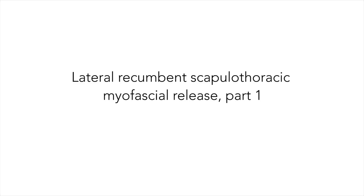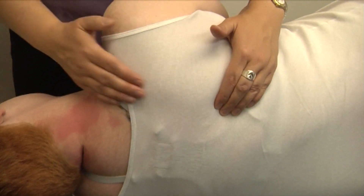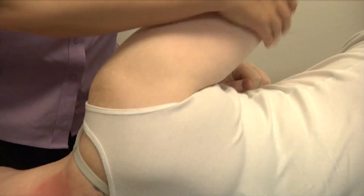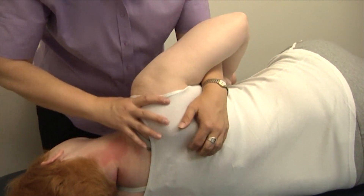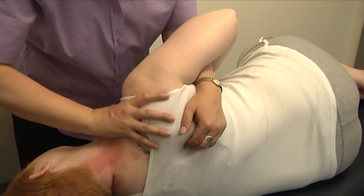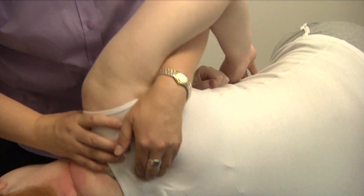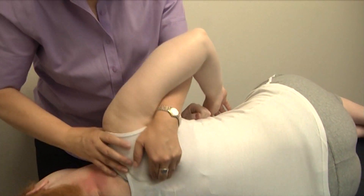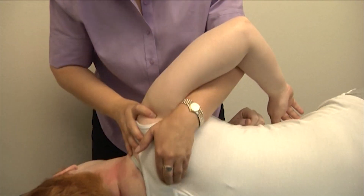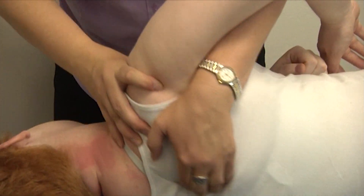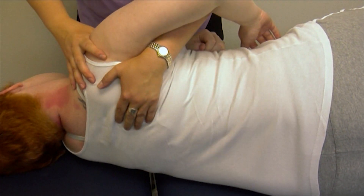Lateral recumbent scapulothoracic myofascial release, Part 1. The subject lays on her side, facing the physician. The subject's arm is placed over the physician's caudad arm. Contact is on the superior and inferior medial angles of the scapula. The hand on the superior aspect of the shoulder initiates a rhythmic, circular motion, while the inferior hand contacts the muscles along the medial border. The scapula is carried laterally in a rhythmical fashion to release the muscular attachments of the rhomboids and paraspinal muscles. Fascial restrictions can then be assessed in a superior-inferior, medial-lateral, and rotatory motion. The scapula can then be taken either directly or indirectly to a balance point and held for 20 to 60 seconds until a release is palpated. Then the region is reassessed.